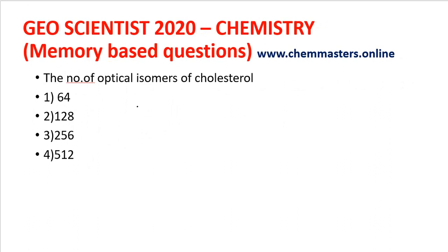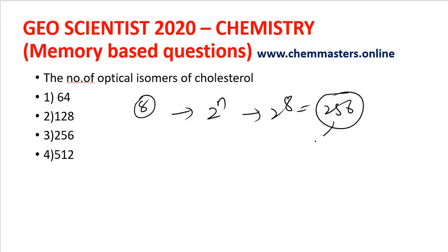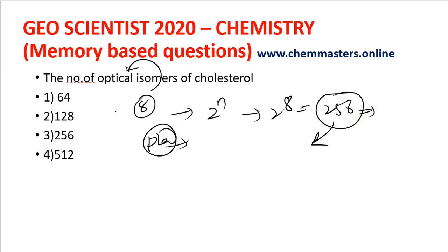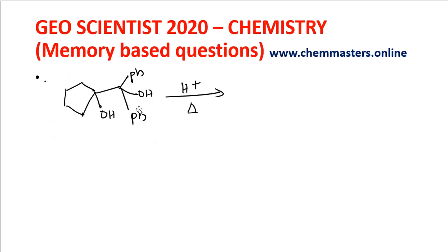Next question: the number of optical isomers of cholesterol. Cholesterol has 8 chiral centers. For an asymmetrical compound, we use the formula 2^n, so 2^8 = 256. Since the compound has no plane of symmetry, all chiral isomers are optical isomers, so it must have 256 optical isomers. The third option must be the answer.